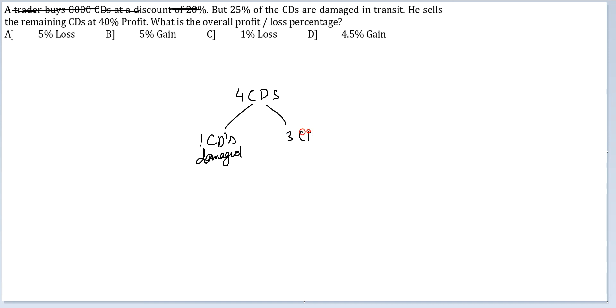And you're selling three CDs. So if I take the net cost price of four CDs to be one, you get four rupees as your cost. And now your remaining CDs are sold at 40% profit.